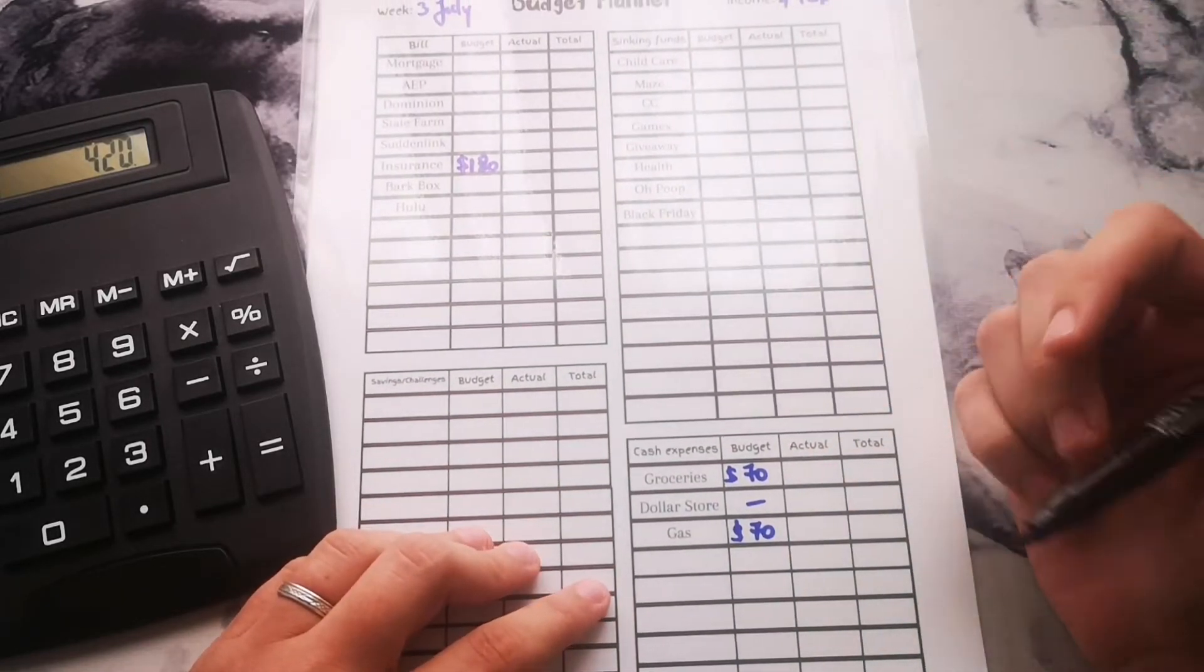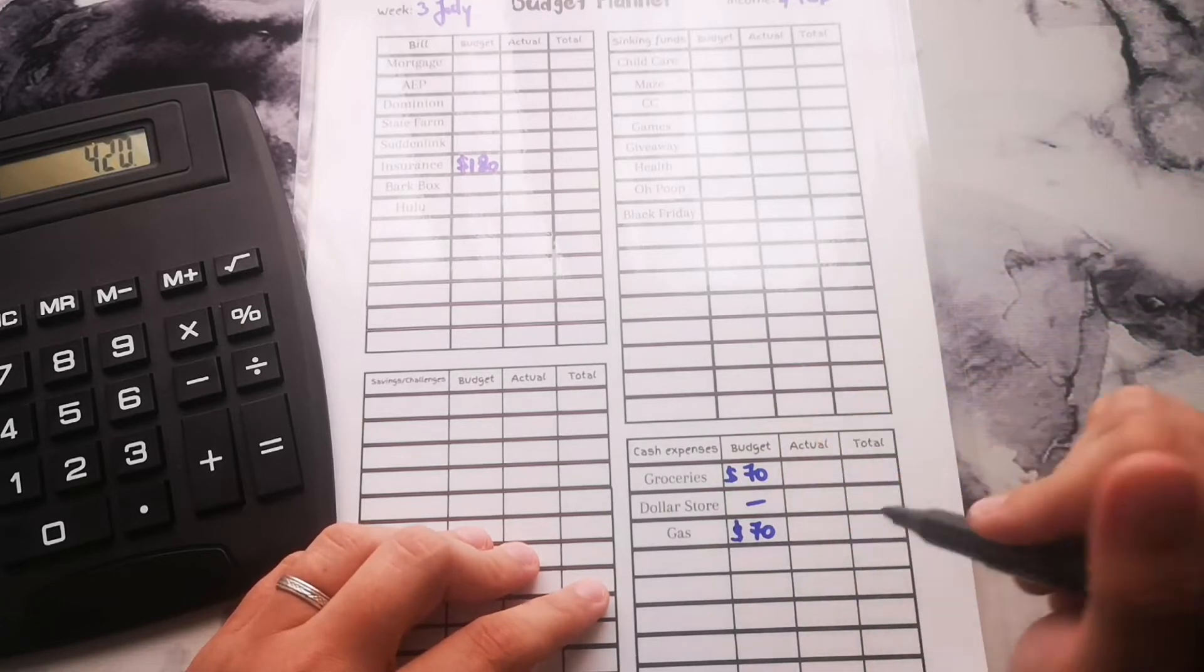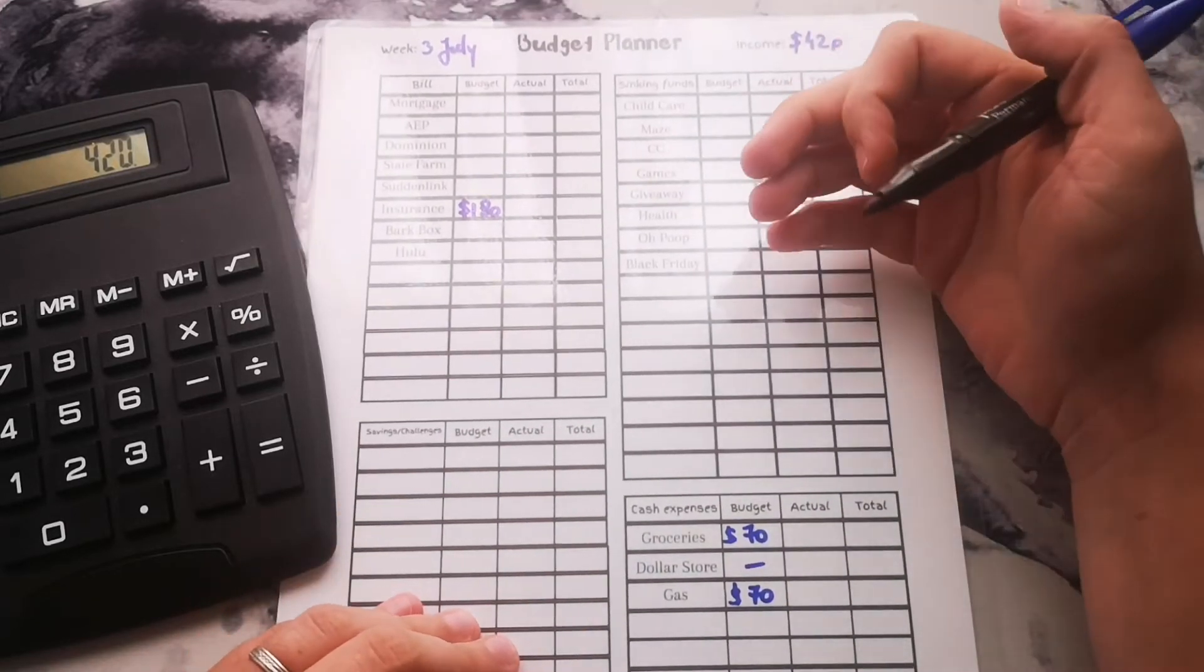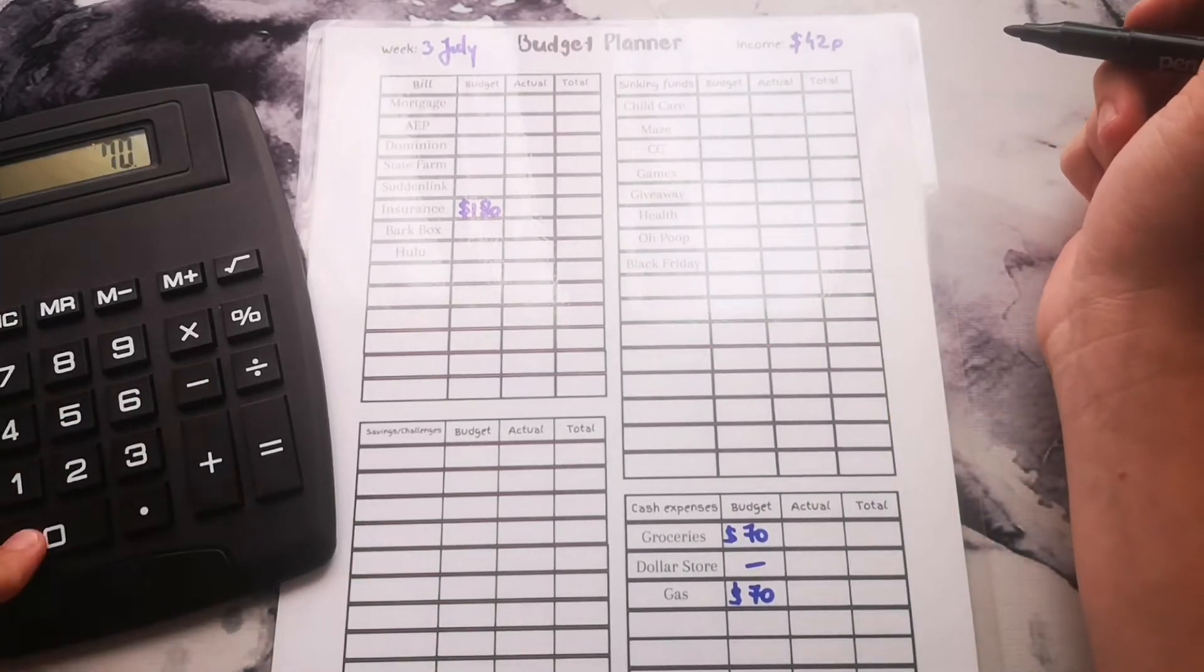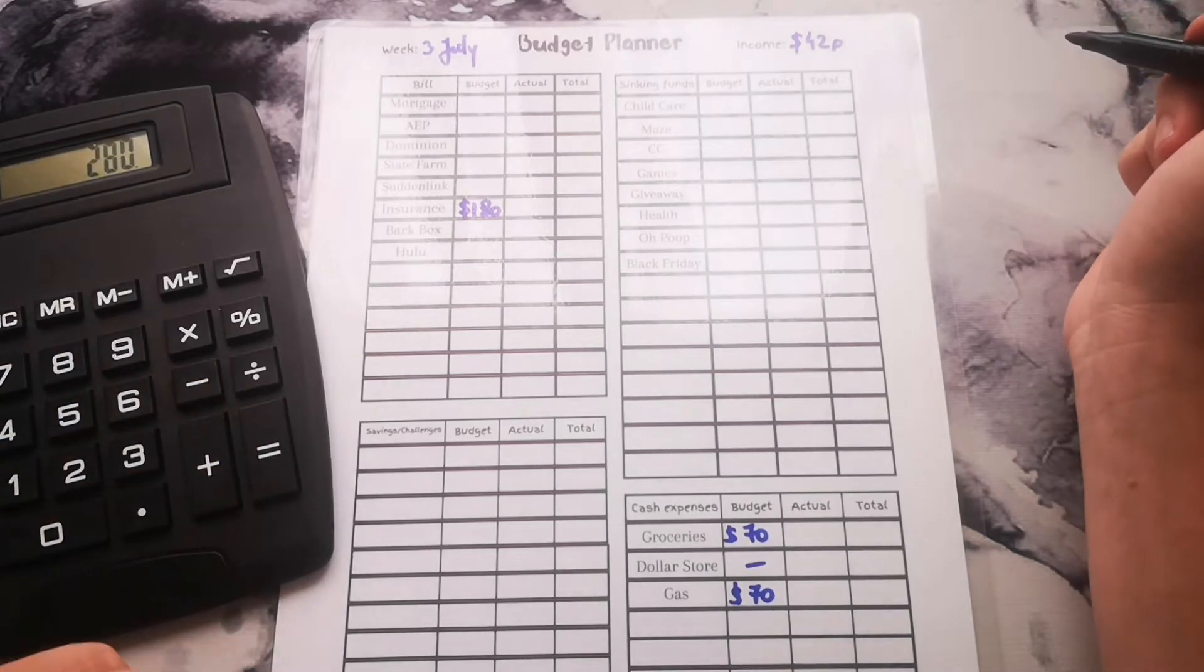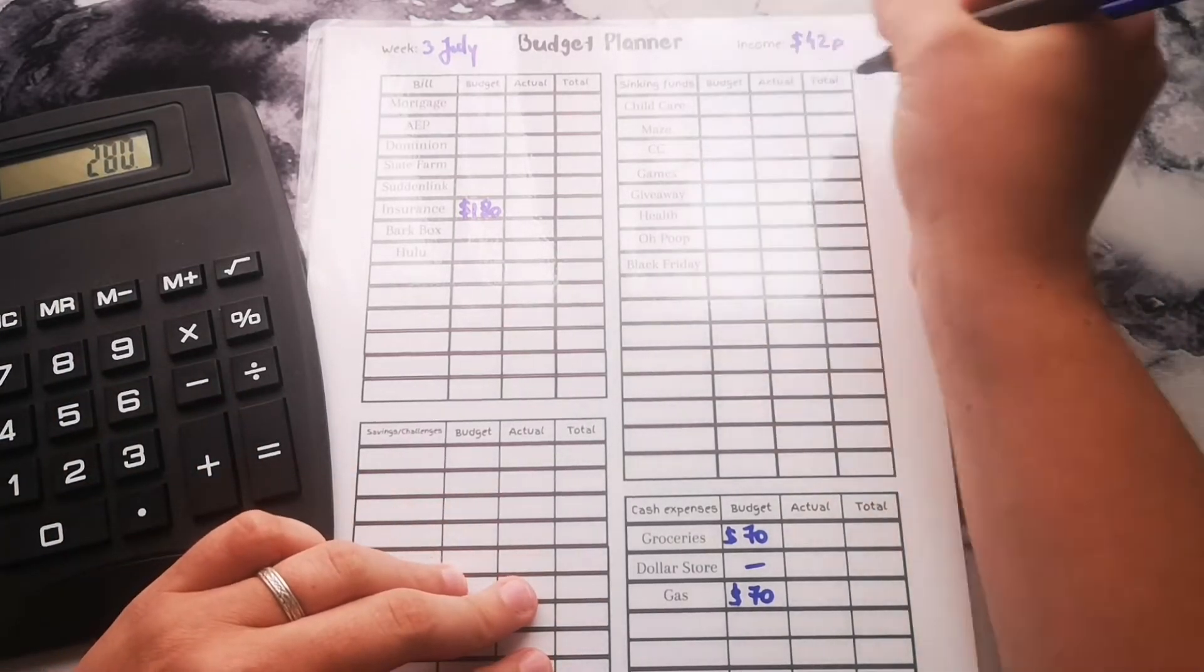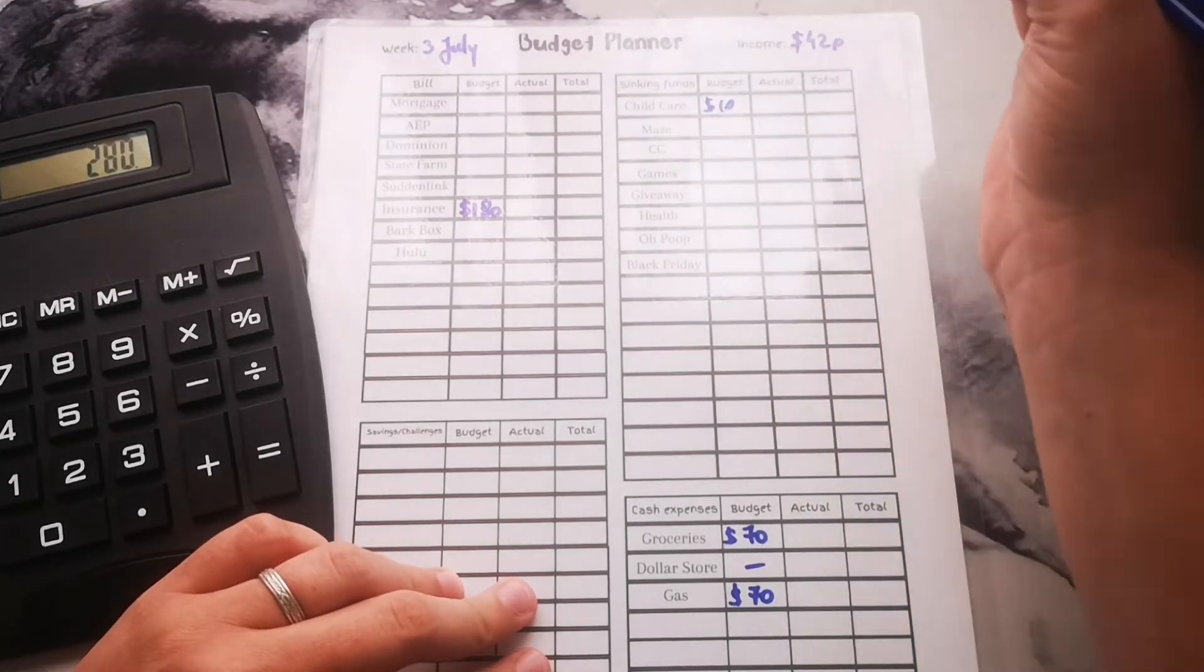I'm not even sure if that's gonna cut it for both the car and the gas, but we're gonna try it out and see. We can move over to our sinking funds. We have $74 groceries, $70 for gas, so we have $280 left. Child care is going to get $10 this time around.